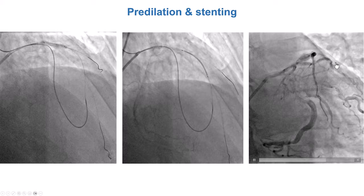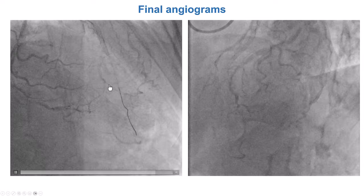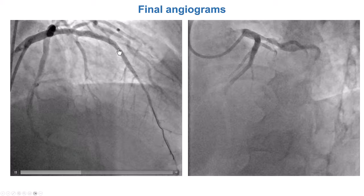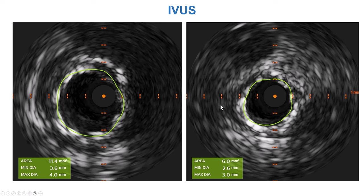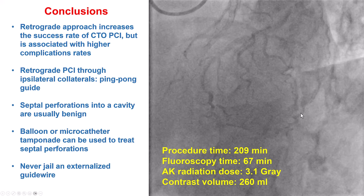This provided a nice result. We have essentially all the branches preserved — the diagonal at the distal cap, and a good bunch of septals. We performed intravascular ultrasound, which is especially important because of the calcification, and that seemed to improve the area of the vessel. So this was a nice final result.